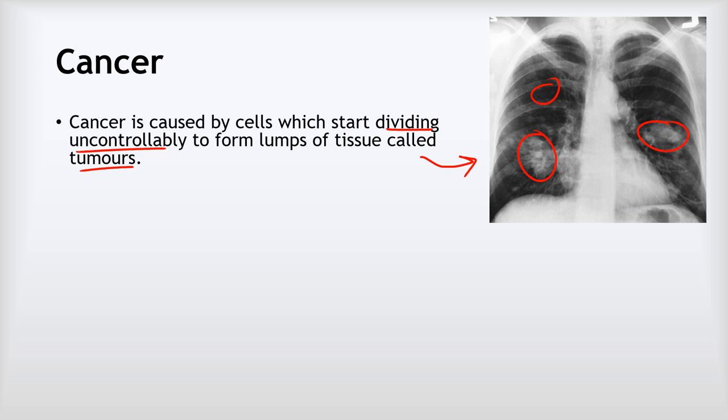Cancer is an awful thing and about 40% of us will develop it at some point in our lives. It's really important to note it's not necessarily the death sentence that it perhaps once used to be — there are lots of treatments now and survival rates for cancer are improving all the time.